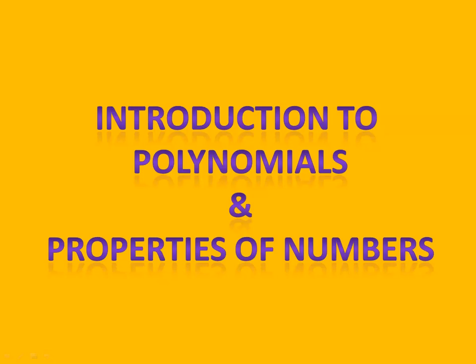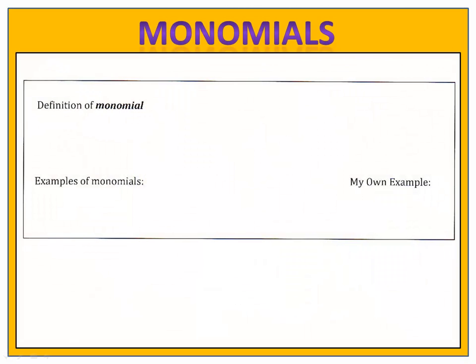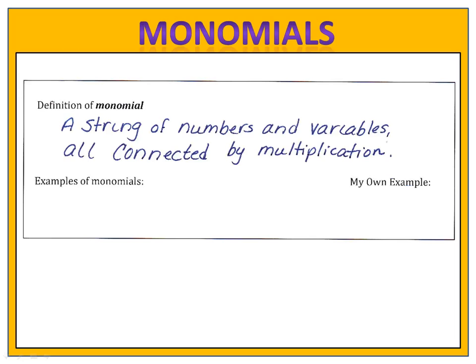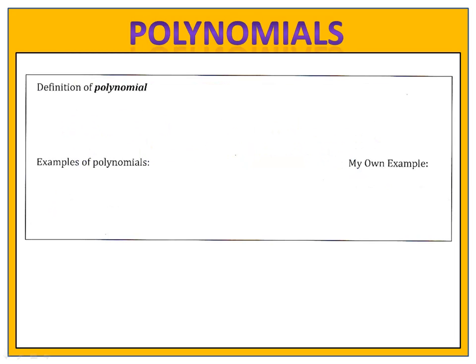In today's lesson, we're going to begin with an introduction of polynomials, and we're going to discuss a lot of the vocabulary that goes along with this. Then we'll talk about some properties of numbers that are really important. Let's start with some definitions. A monomial is a string of numbers and variables all connected by multiplication. Remember, a variable is simply a letter that stands for an unknown quantity. If we connect several of these together, we have a polynomial.